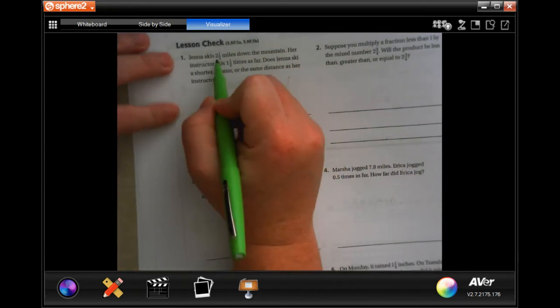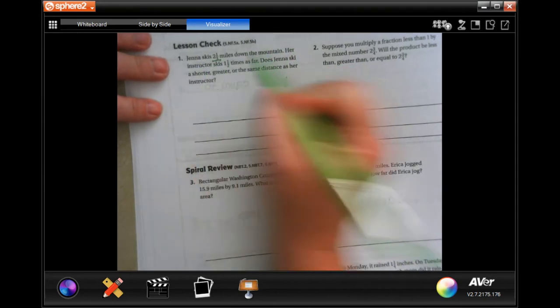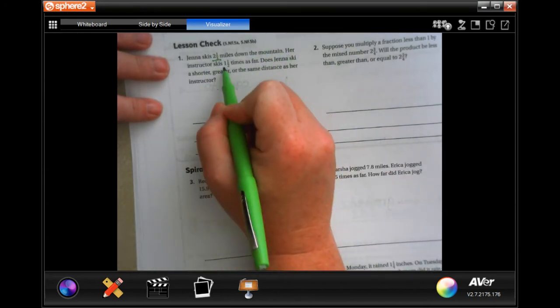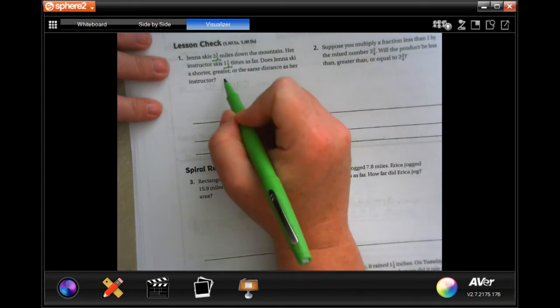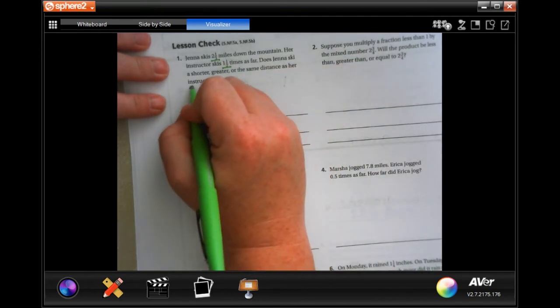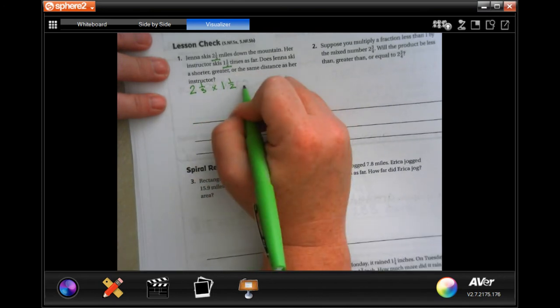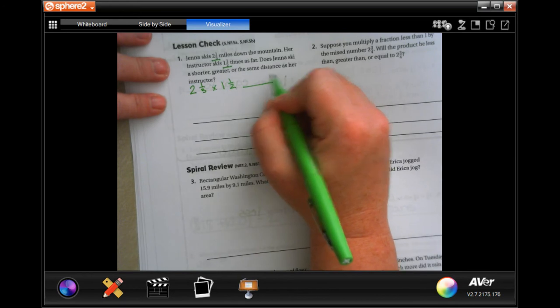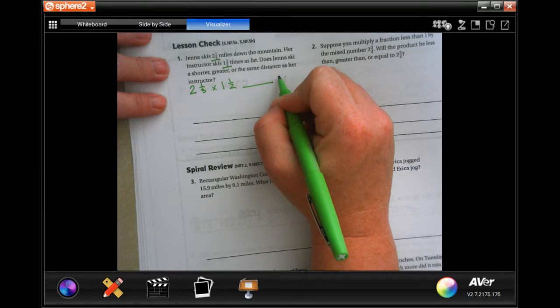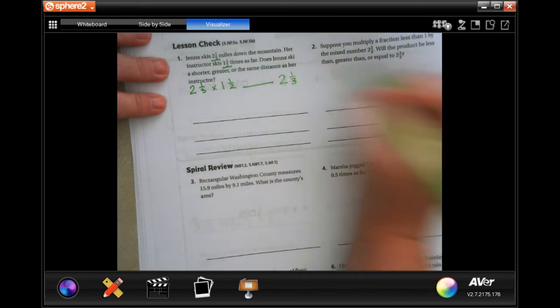Same thing, guys. Jenna skis two and one-third mile down the mountain. Her instructor skis one and a half times as far. Does Jenna ski a shorter or greater distance than her instructor? So, all it's saying is two and one-third times one and one-half is greater than or equal to her two and one-third.